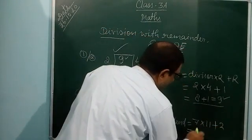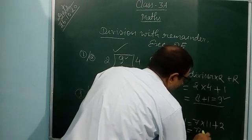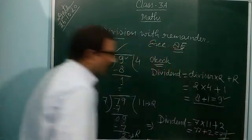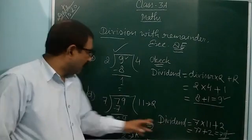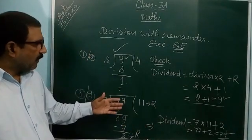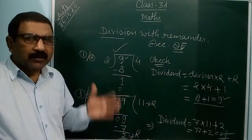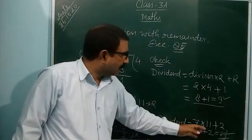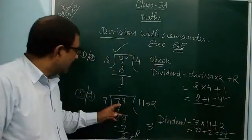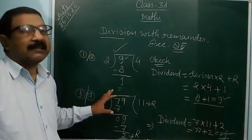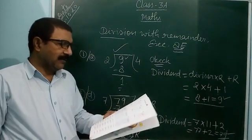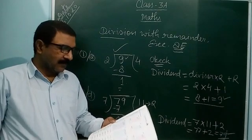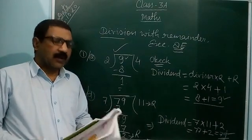7 × 11 = 77, plus 2 = 79. We get 79, and the dividend is also 79 — so the division is correct. By this formula, dividend equals divisor multiplied by quotient plus remainder, and the answer came 79, which matches. You can complete questions 1a, b, c, d in your book and copy. Tomorrow I will explain division second — a, b, c, and d. Thank you.